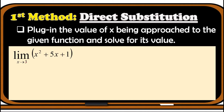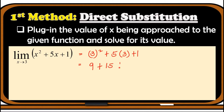Second example: find the limit of x squared plus 5x plus 1 as x approaches 3. In direct substitution, we plug in 3 for every x: 3 squared plus 5 times 3 plus 1. The square of 3 is 9, plus 15, plus 1. This gives us 25. So the limit of x squared plus 5x plus 1 as x approaches 3 is 25.